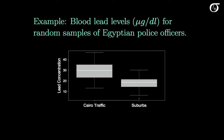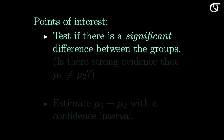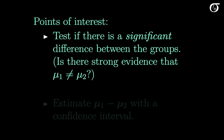Let's look at the example we've seen before, where we have a random sample of Cairo traffic police officers and a random sample of officers from the suburbs, with blood lead concentration measured. It looks like the traffic officers in Cairo have a greater blood lead level. We may wish to test if there is a significant difference — is there strong evidence that mu1 is not equal to mu2?